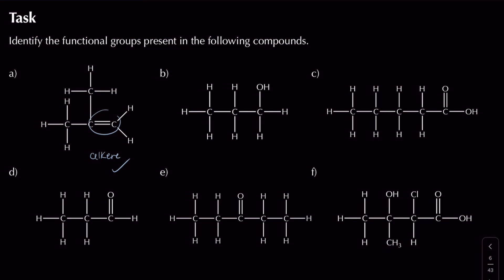For compound B, we have a carbon bonded to an OH — so this compound is an alcohol. For compound C, we have a carbon double-bonded to an oxygen. It's at the end of the chain, but it also has an OH on the same carbon — so it's not just an aldehyde; it's actually a carboxylic acid. More specifically, this is pentanoic acid because it has five carbon atoms.